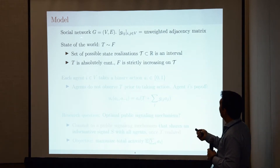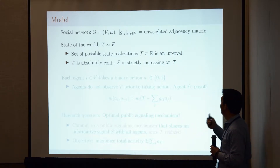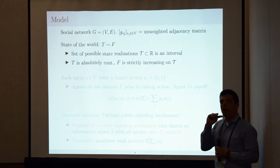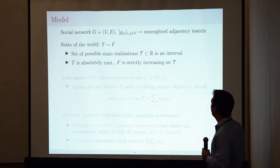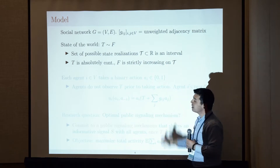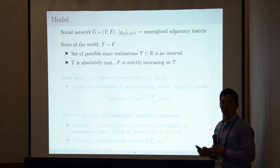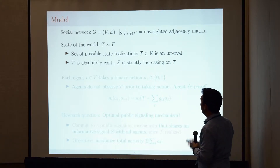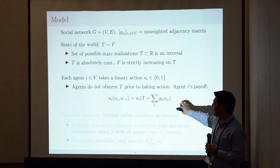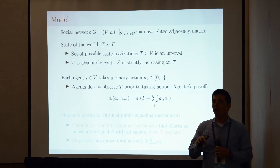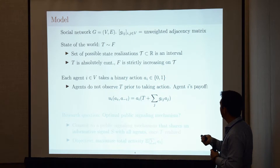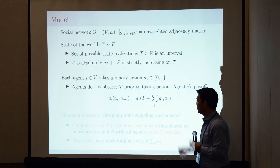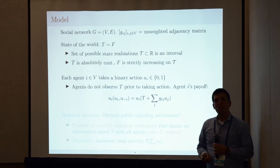More details about the model: given a network with an unweighted adjacency matrix — the paper handles the weighted scenario as well, but this is for simplicity. The state of the world is distributed according to a prior distribution. One assumption I exploit is that the set of possible state realizations is a subinterval of the reals, the state t is absolutely continuous, and the CDF is strictly increasing on the domain. This is the payoff structure I focus on today; the paper explores other settings with a general supermodular function.